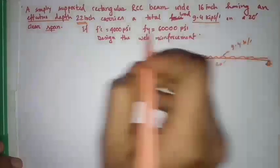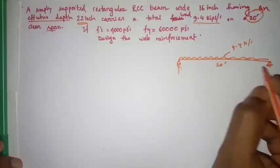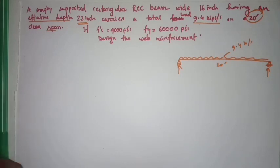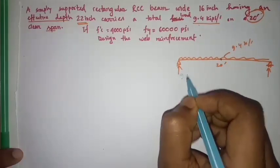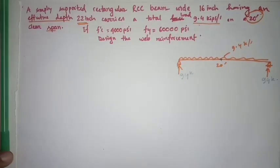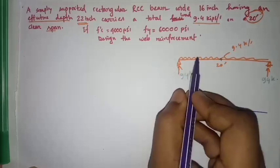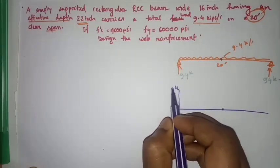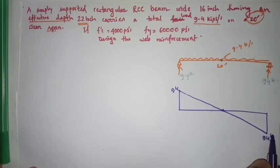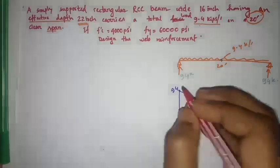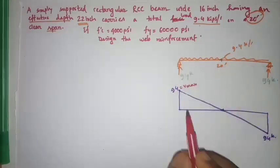Representing the data as a figure: this is the simply supported beam with a load of 9.4 kip/ft over a 20-foot span. The two reactions are equal. Each reaction equals 9.4 × 10 = 94 kips. Drawing the shear force diagram, it starts at 94 kips at the support and reduces with a triangular (linear) shape to zero at midspan. The maximum shear is developed near the support.